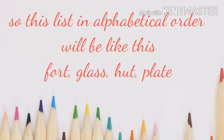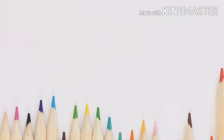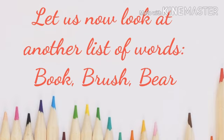So this list in alphabetical order will be: fold, glass, hut, and plate. Let us now look at another list of words: book, brush, beer. Here, all the words are starting with the letter B.